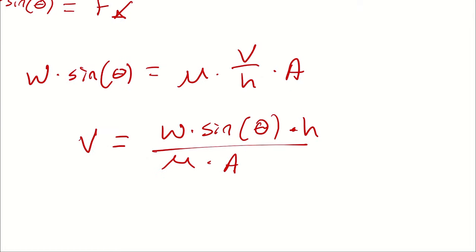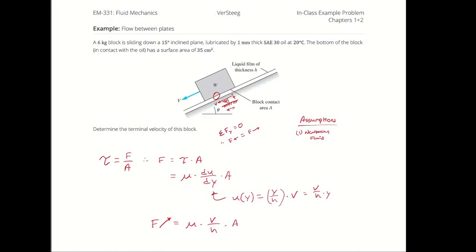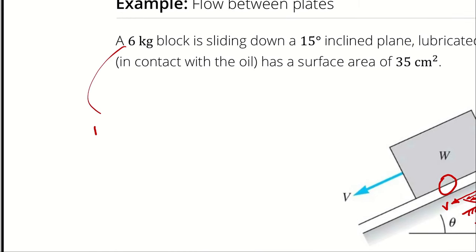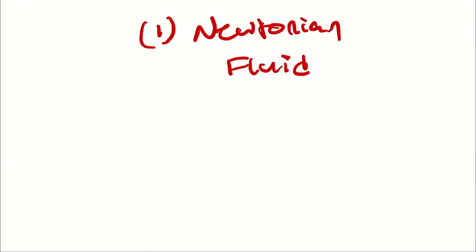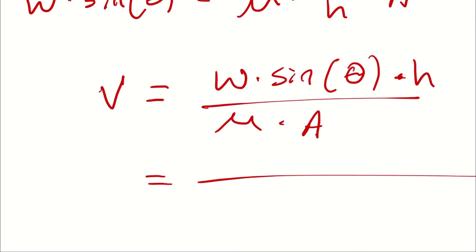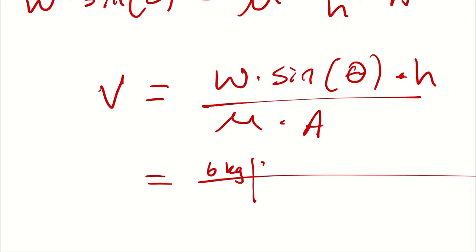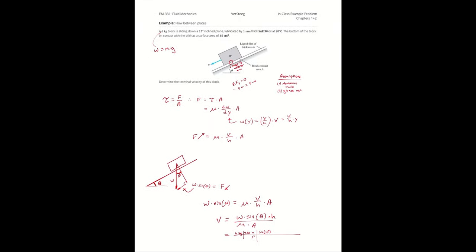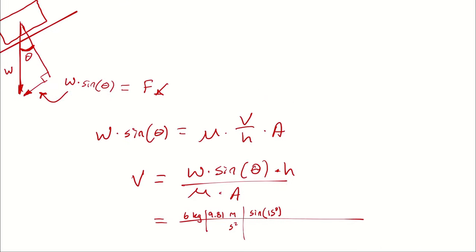So if I start to plug in numbers here, the weight of the block is given as, I guess the mass is given as 6 kilograms. Therefore, the weight of the block is mass times gravity. We are assuming standard gravity. I'll add that to my assumptions for good measure. Then I can say 6 kilograms multiplied by 9.81 meters per second squared multiplied by the sine of 15 degrees.